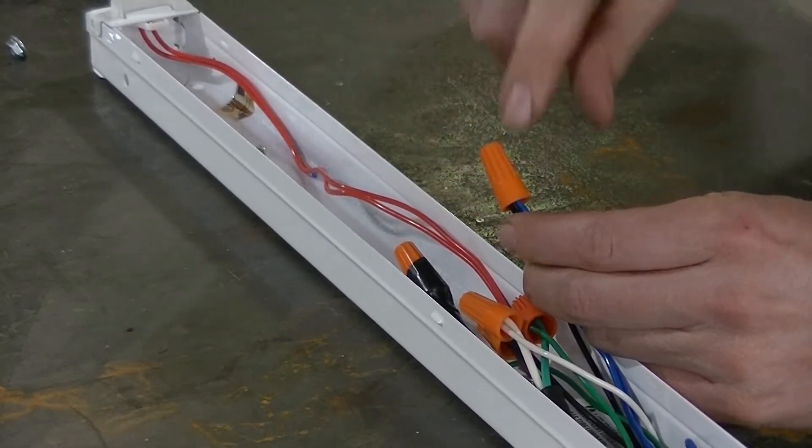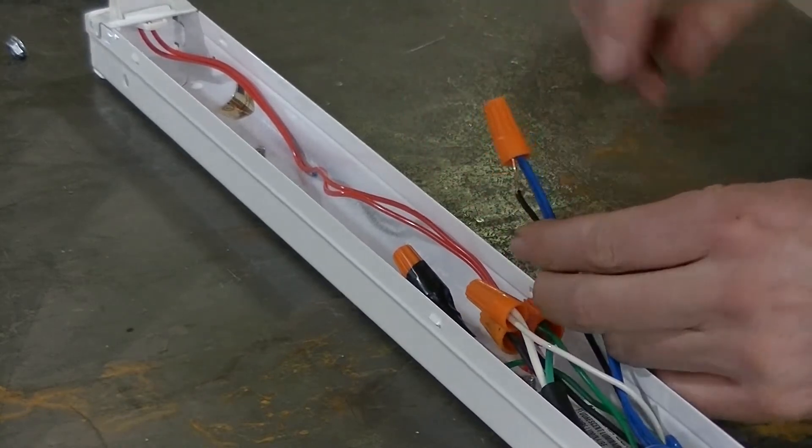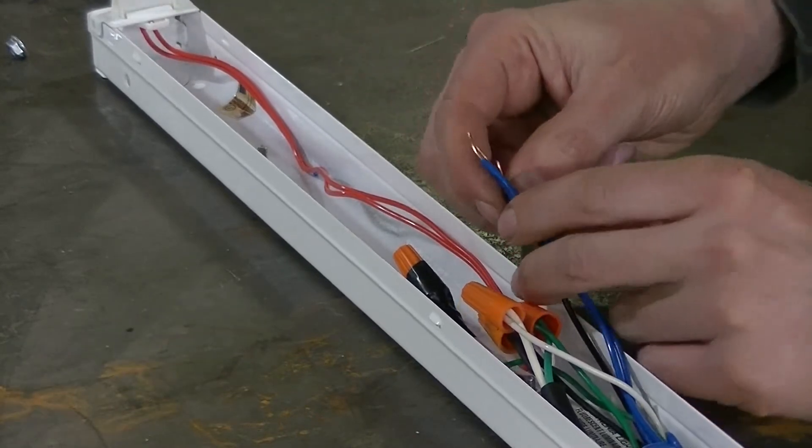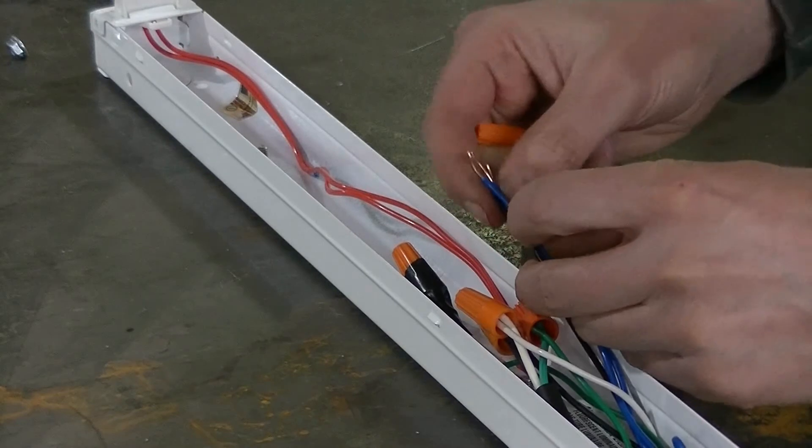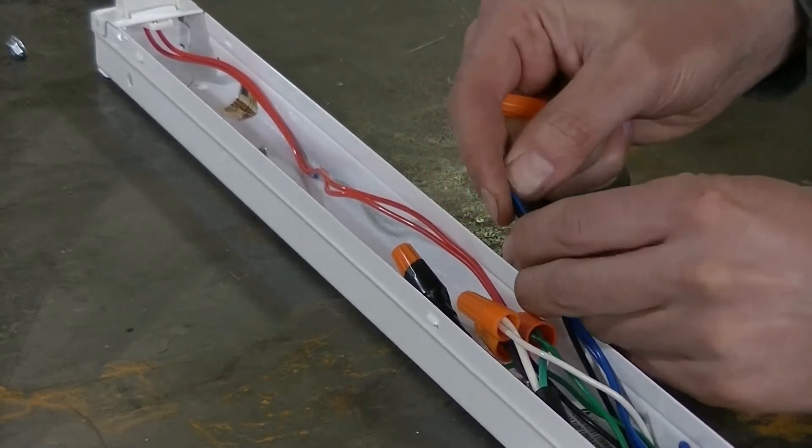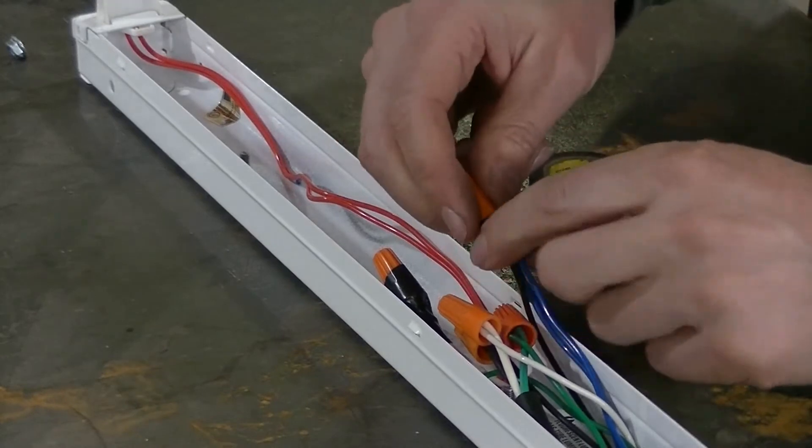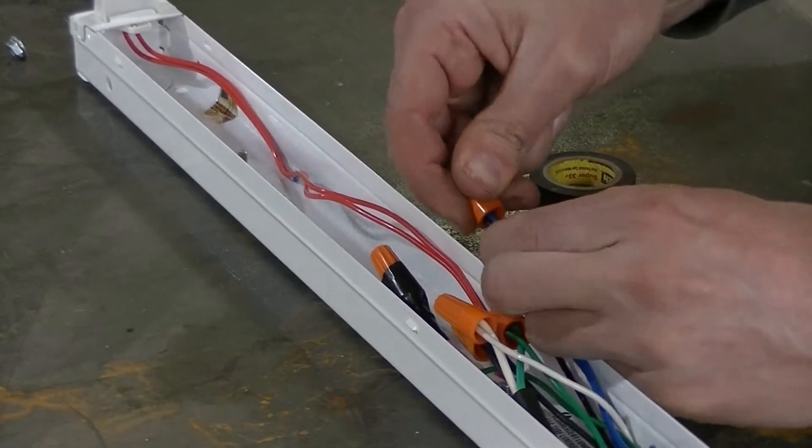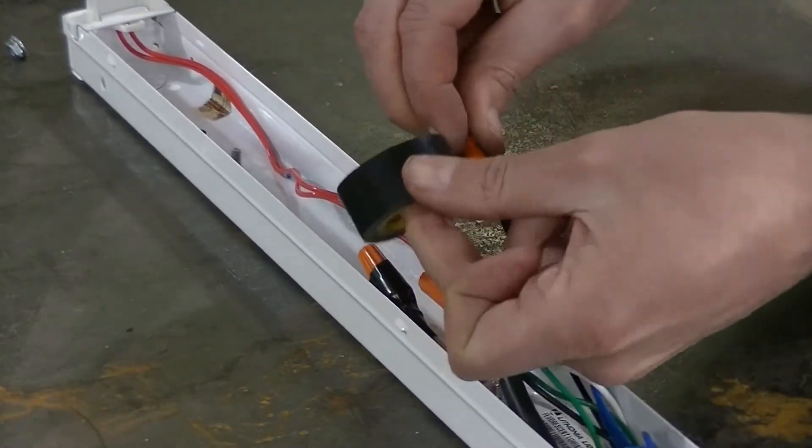You're going to want to get the right gauge wire nut for the gauge wire you're using and make sure that you're getting a good connection. When you put these wire nuts on, you want to make sure all your wires have connected together and one is not loose in there. You need them all tight. You need them all connecting.